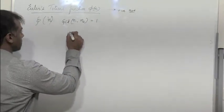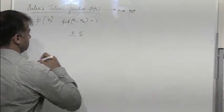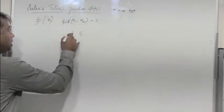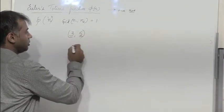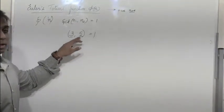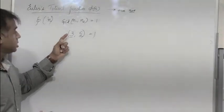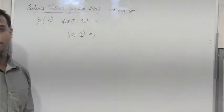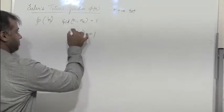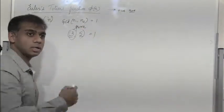Let's take an example: the numbers 3 and 5. These two numbers are prime numbers, and the only number which divides both 3 and 5 is 1. There are no other common numbers which can divide both 3 and 5. This is true when one or both of the numbers are prime.